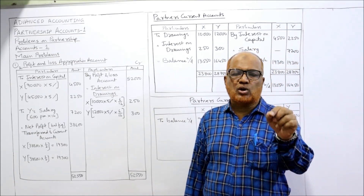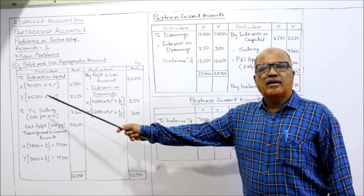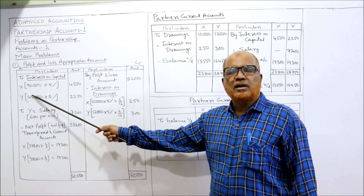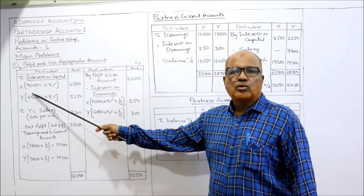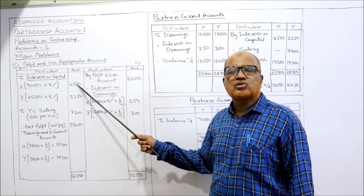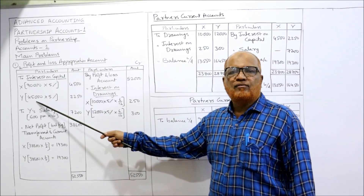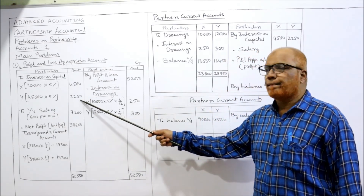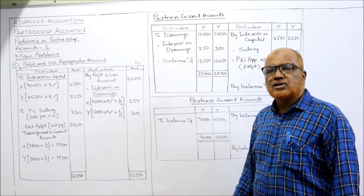Interest on capital on the debit side: 90,000 is X's opening capital and closing capital is also the same, so 90,000 × 5% = 4,500 — this is interest on capital for X. Interest on capital for Y: 45,000 × 5% = 2,250.